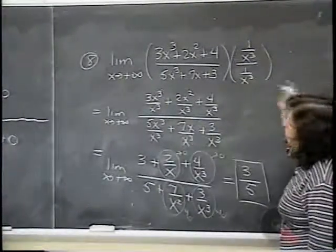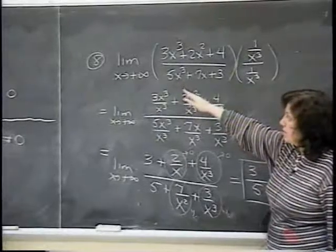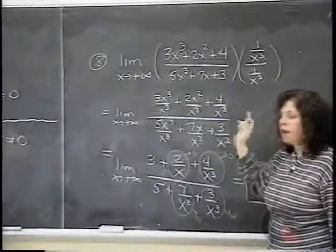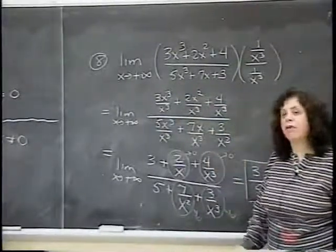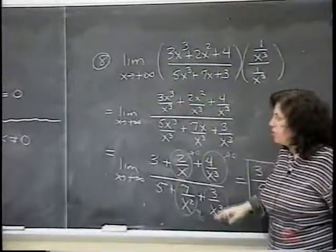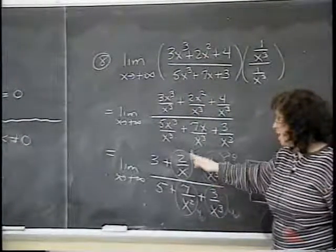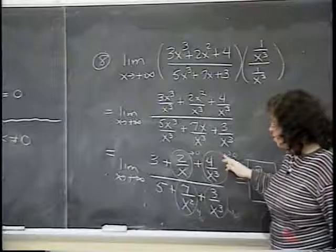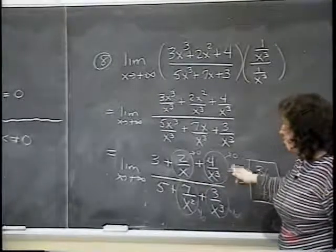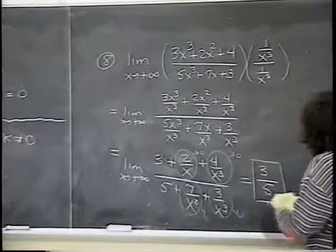By the way, in this problem it wouldn't have mattered if x approached minus infinity — everything would have been the same. Sometimes it does matter, and we'll see that later on. But here, whether x approaches plus or minus infinity, the k/xʳ terms go to zero either way.